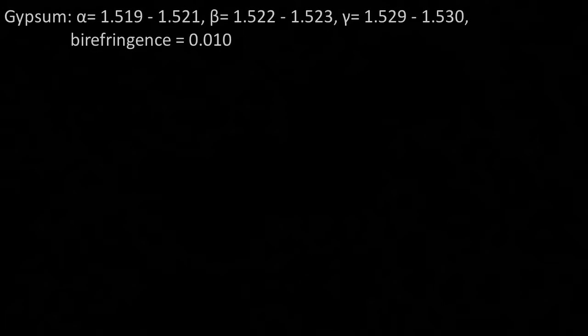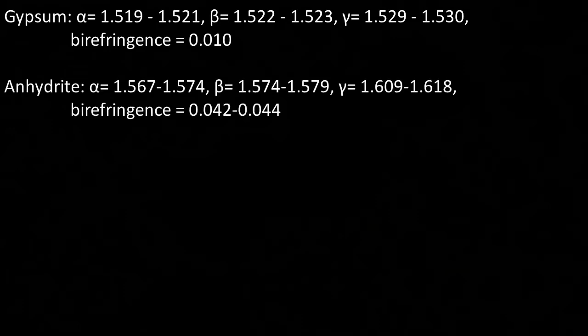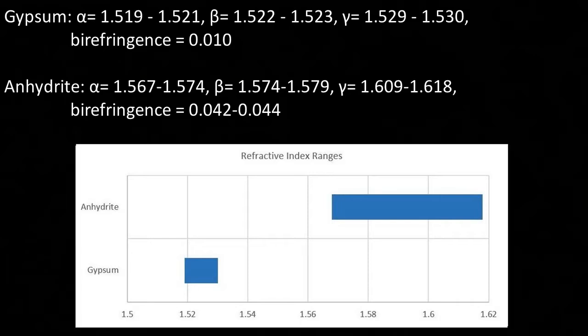Gypsum has moderate refractive indices of roughly 1.52 to 1.53. The anhydrous phase of the mineral, anhydrite, has refractive indices of 1.567 up to 1.618. So there is a very good gap between the two, which we can use to our advantage.